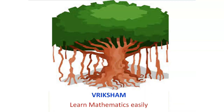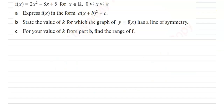Hi viewers, welcome to Brixham channel. Learn mathematics easily. Here in this question we are given with a function f(x) equal to 2x squared minus 8x plus 5 for x belonging to the real numbers.